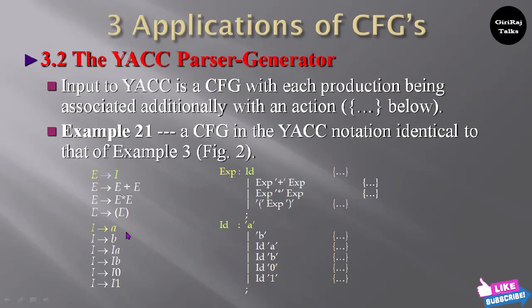If you consider I tends to A, the ID is A here. I tends to B — ID is B here. I tends to IA — ID is A here. I tends to IB — ID is B here. I tends to I0 — ID is 0. I tends to I1 — ID is 1.